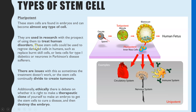These pluripotent cells are really useful for research. At the moment, scientists are researching how you could use those types of cells to treat human disorders. Because if those cells can differentiate into any type of cell, there's the potential that they could be used to create or replace damaged cells or tissues — for example, replacing burnt skin cells, or replacing the beta cells in type 1 diabetics whose beta cells are not creating insulin, or replacing neurons in Parkinson's disease where the brain stops producing enough dopamine. There's a whole range of potential applications.